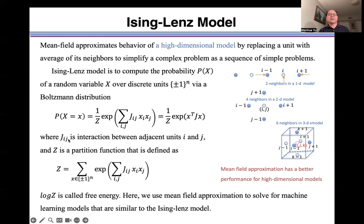Where J_ij is the interaction between adjacent units i and j, and Z is a partition function that is defined as summation over all the units in a system graph. Log Z is called free energy. Here, we use mean field approximation to solve machine learning models that are similar to the Ising-Lenz model.